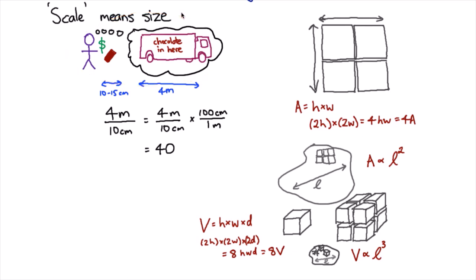Well, if I had a chocolate bar that was 4 metres long, so it looked exactly like a chocolate bar, just scaled up to be 4 metres long, we've already worked out that's about 40 times as big in one length.